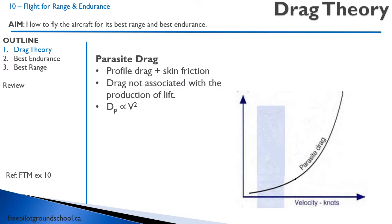Let's begin this lesson with a bit of drag theory. If you recall from your ground school, we have four forces involved in flight. There are actually many more, but they can be reduced to these four forces: thrust, lift, drag, and weight. We're going to talk about drag — that force that opposes thrust caused by the resistance of the air. We can break down our drag into a number of different types of drag. We have parasite drag and induced drag.